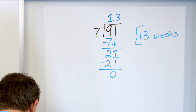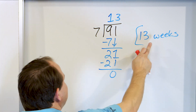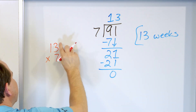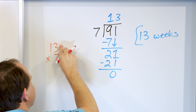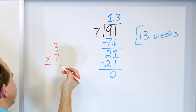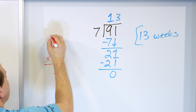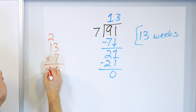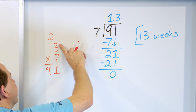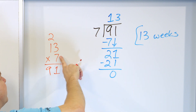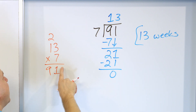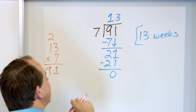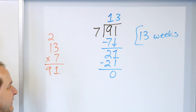If you wanted to check yourself, you could take 13 and multiply by seven. If it really is 13 weeks and seven levels every week, then seven times three is 21, carry the two. Seven times one is seven, and then eight, nine — that gives us 91 total levels, which is exactly what we had in the problem statement to begin with.